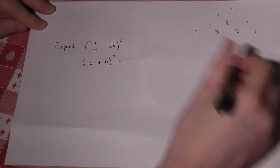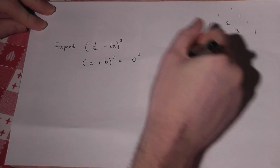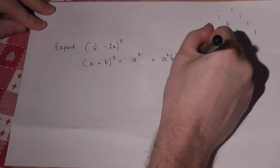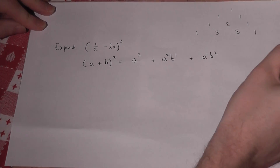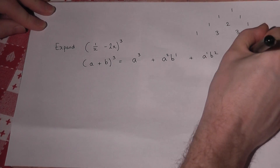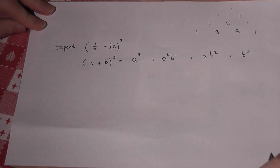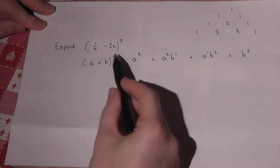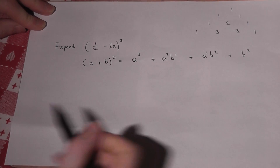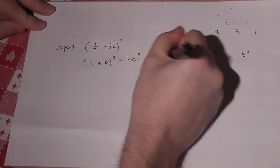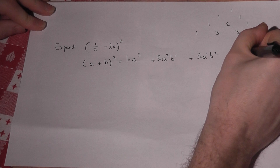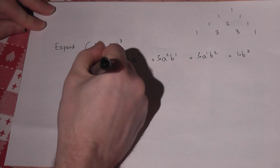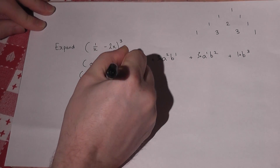Since it's cubed, we get an a cubed term. Then the next term is a squared b, then a to the 1 b squared, and then a to the 0 b cubed. We have to add in the coefficients from the row which has a 3 after the 1, so it's 1, 3, 3, 1. That gives us the general expansion.